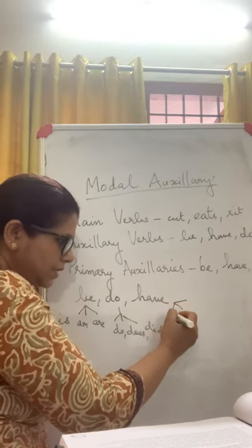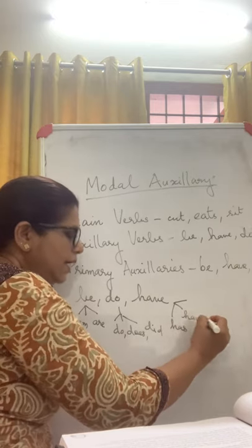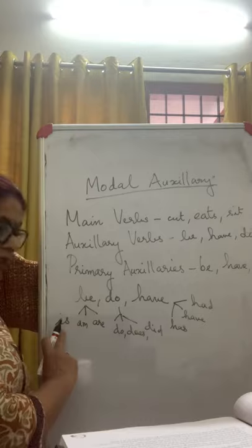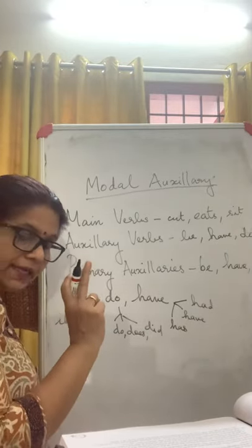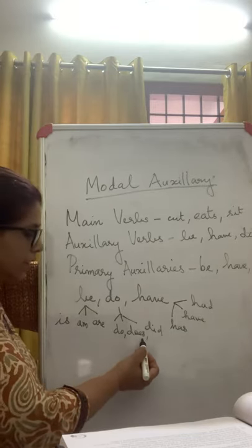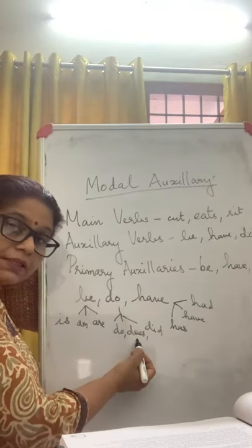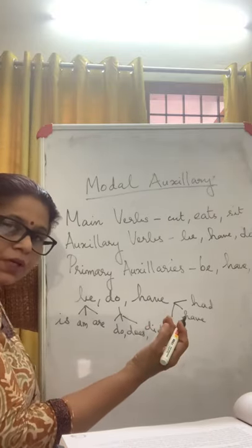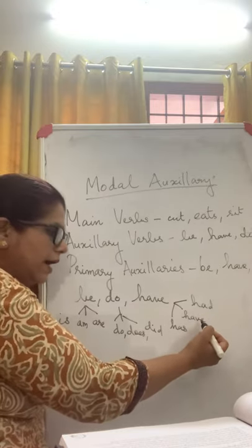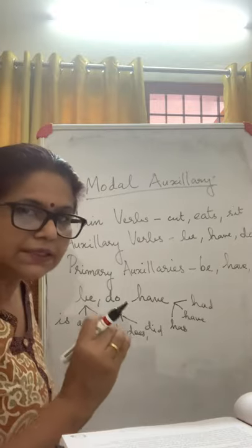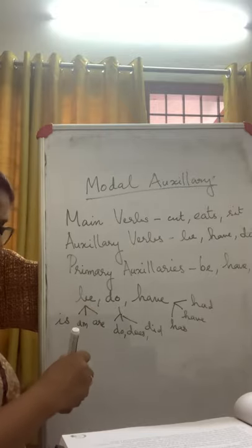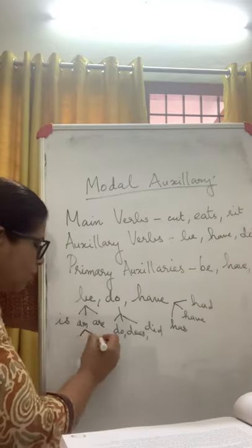With 'have', again you have three: has, have, had. So in each one of these, you have three options. 'Is' is for the singular, 'am' goes with 'I' alone, and 'are' is used with plural. Similarly, 'do' goes with plural, 'does' goes with singular, and 'did' is used when talking about past tense. 'Has' is for the singular, 'have' for the plural, and 'had' in the simple past.